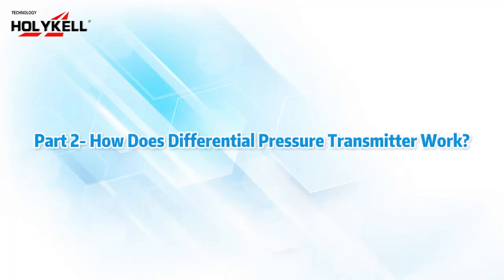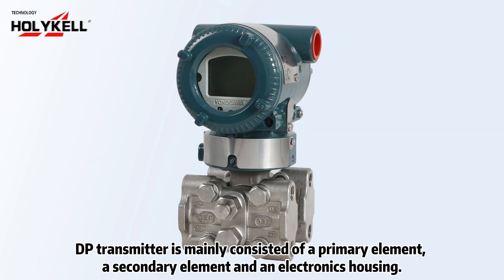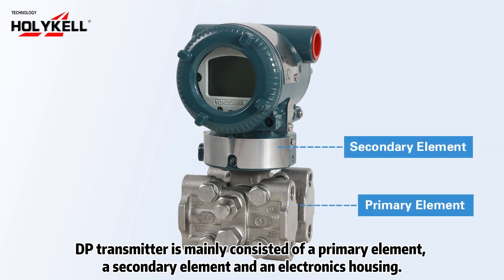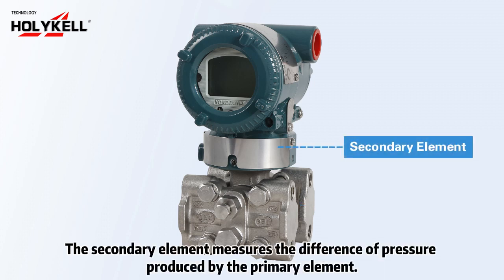How does a Differential Pressure Transmitter work? A DP transmitter mainly consists of a primary element, a secondary element, and an electronics housing. The primary element produces a difference in pressure as the flow in the pipe increases.